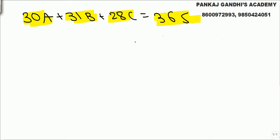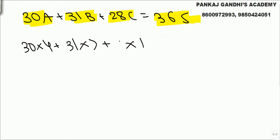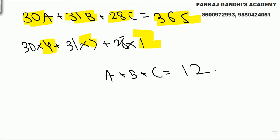28 days into 1 month, 31 days into 7 months, 30 days into 4 months — that's the number of months in a year. Total 12 months. So A plus B plus C equals 12. That's what the equation was all about — the number of ones, sevens, and fours that make up 12 months.